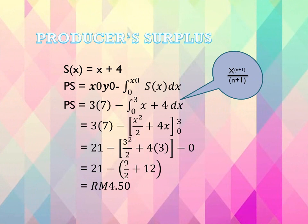For the producer surplus value, first use the supply equation SX equals X plus 4. Second, apply the PS formula. Substitute the values into the formula: PS equals 3 times 7, minus the integral from 0 to 3 of (X plus 4) dx. To complete this, integrate X plus 4 over the interval.